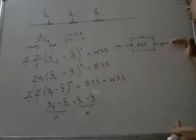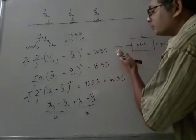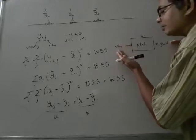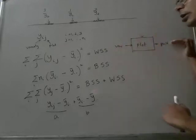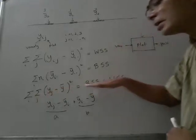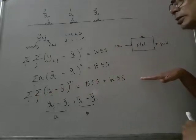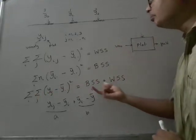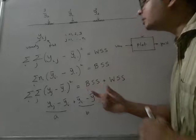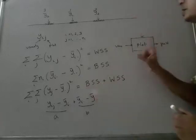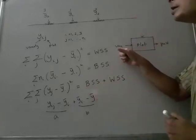So any variability that you see here is the net effect of variability among the varieties and random error. And T precisely captures that same intuitive idea because this between sum of squares is basically the variability introduced by the variety.